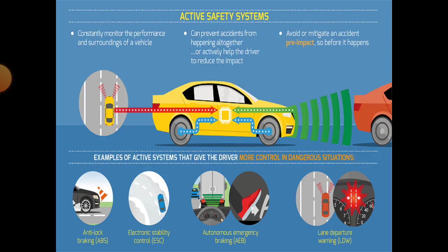We need to understand how active safety systems are used in your vehicle. These systems are constantly monitoring the performance and surroundings of a vehicle. They can prevent accidents from happening altogether, or actively help the driver reduce the impact and mitigate an accident before it happens — that is, pre-impact.